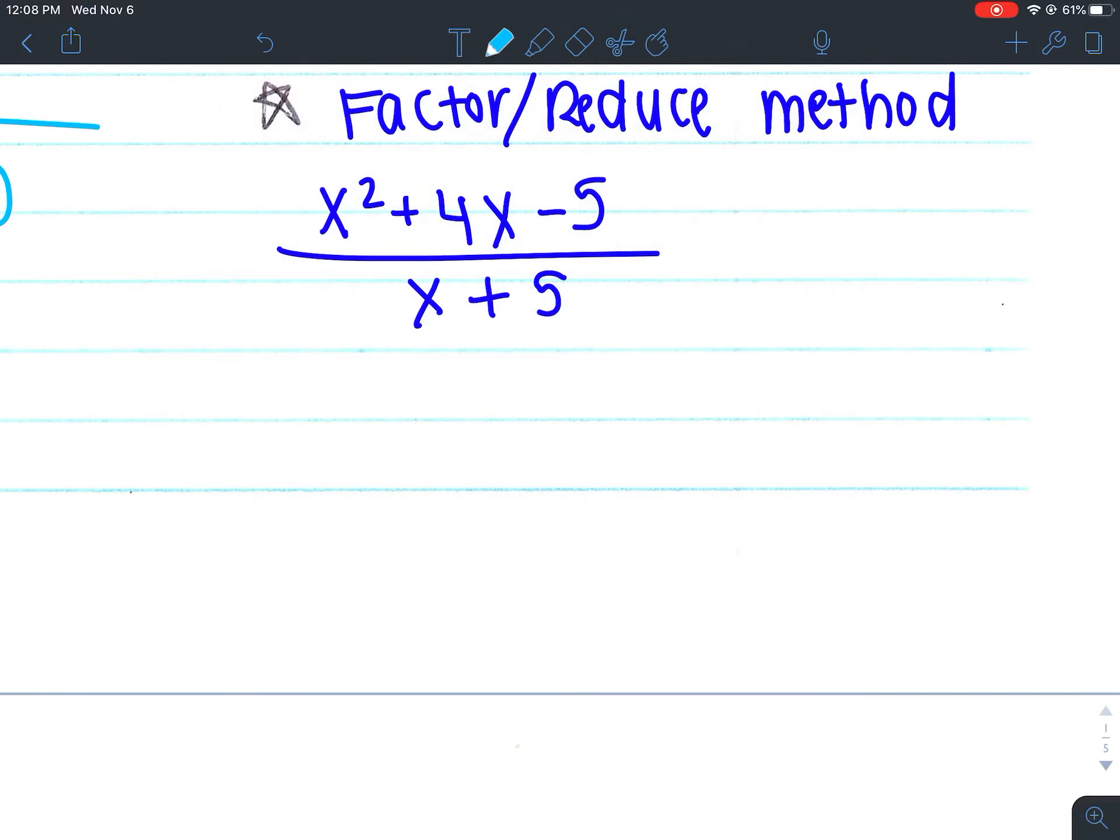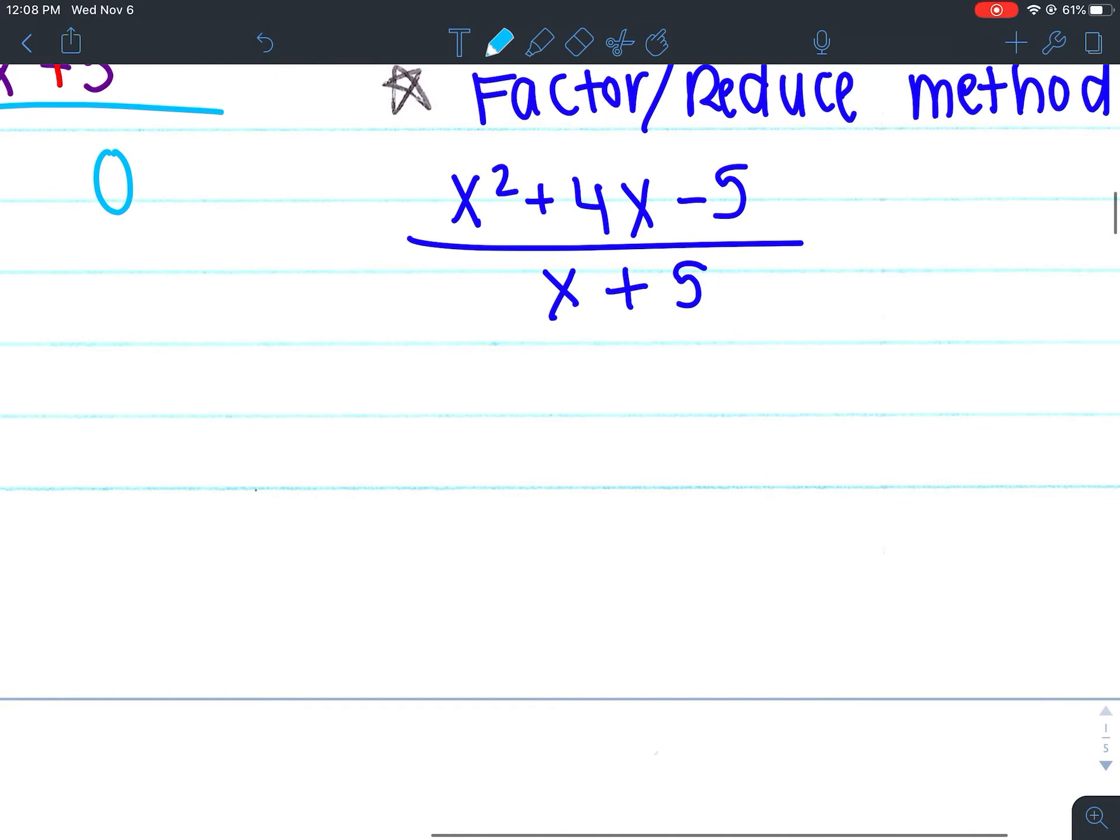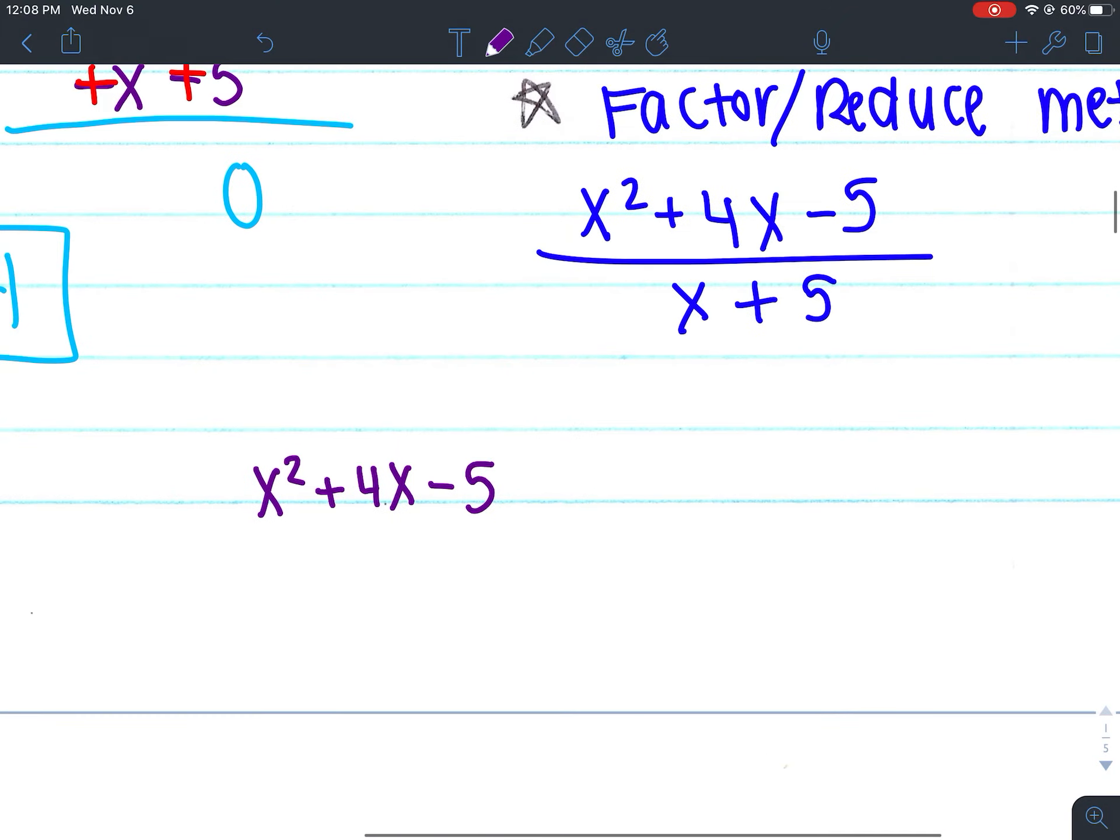Okay, so the first thing we're going to do is factor. Well, you're going to want to factor the trinomial up at the top. So let's go ahead and factor that. So we have x² + 4x - 5. The first thing you check for when you factor is a GCF and we don't have one here other than 1. So I'm going to go ahead and start my AC method.